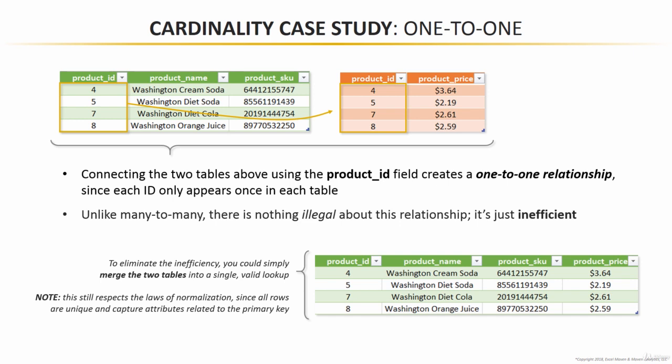I know what you're thinking — I've been saying this whole time never to do merging, it's inefficient, use relationships instead. But trust me, in this scenario it's legit because we're still respecting the laws of normalization. All of our rows here are unique, and this merged blended table still captures attributes related to the primary key, so it still serves one single purpose.